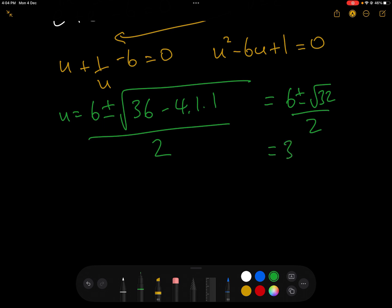which we can simplify to 3 ± (taking 16 out of here) 3 ± 2√2. So we have that u = 3 ± 2√2.